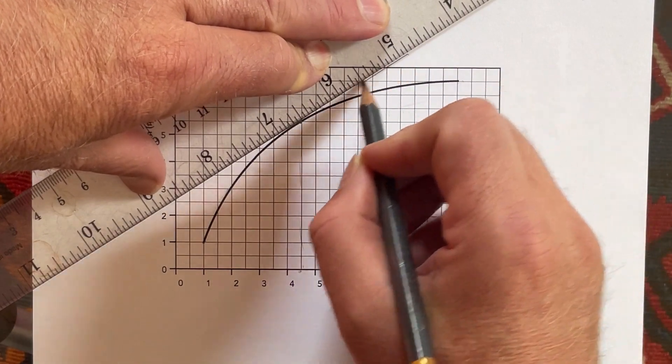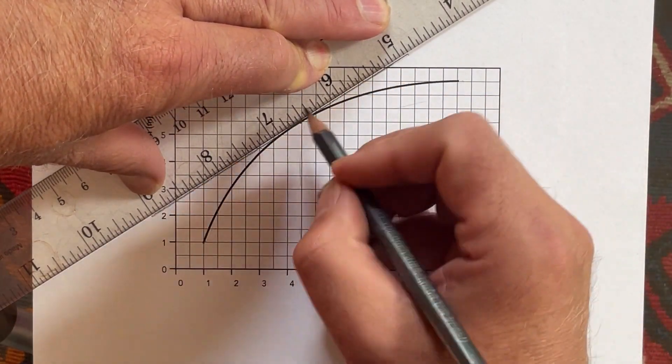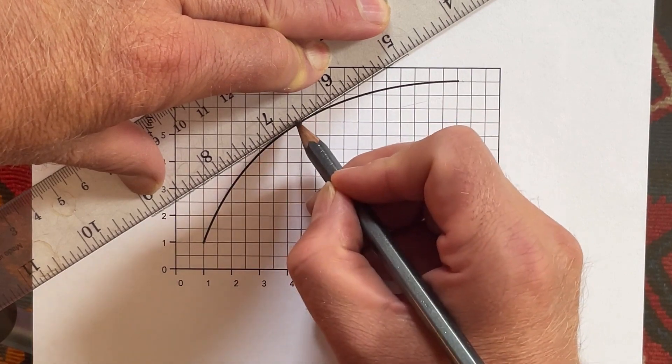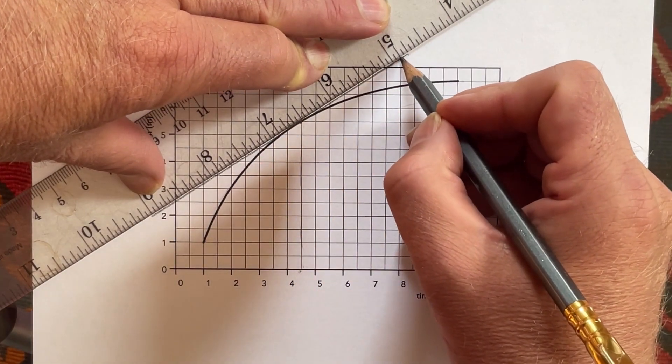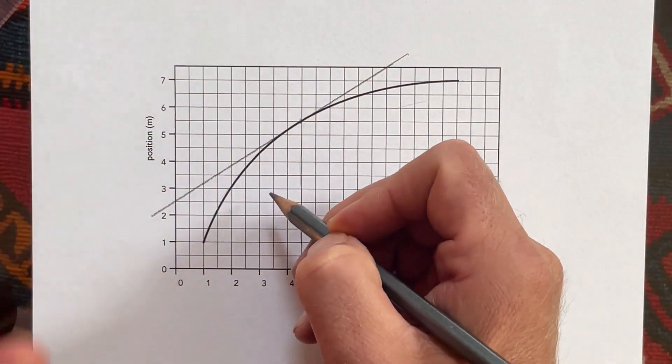I'm going to hold the ruler in place. I'm going to draw my tangent line. And notice, I'm going to draw the tangent line long. I'm not going to draw just a tiny little line here because it's much easier to accurately find the slope of a nice long line than it is of a short line. So now I've got a line.